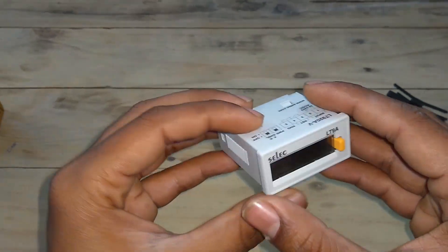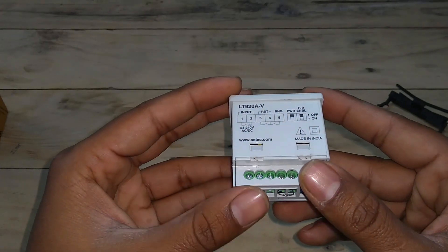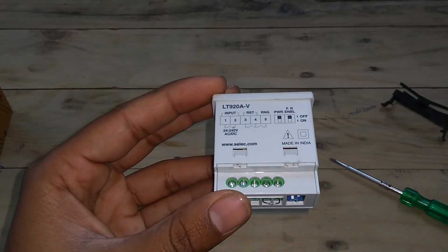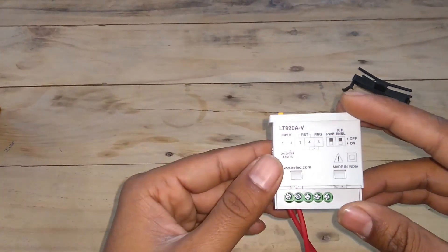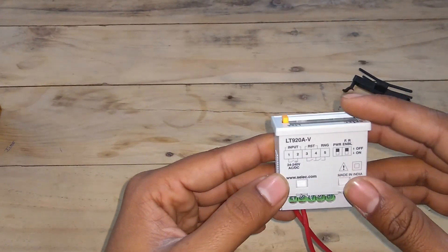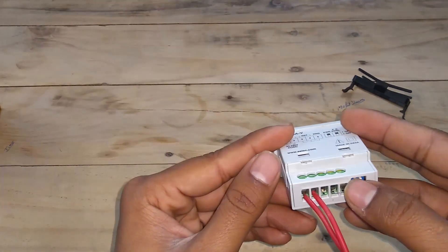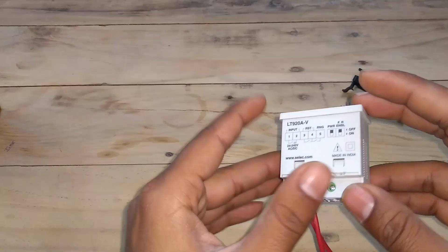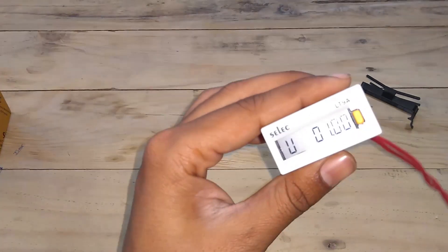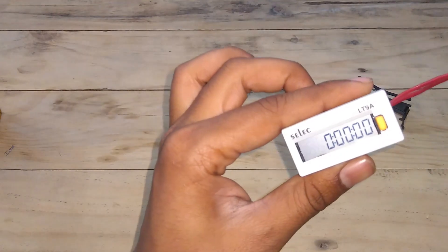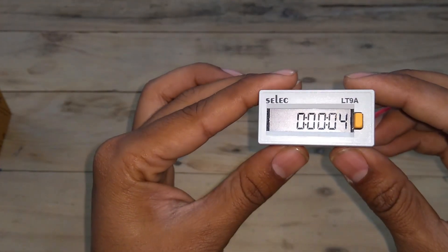Let's give it the input and check what are the values on the screen. I have connected the 220 volt AC to the input of this time totalizer. Now I will turn it on. Now I will plug the power. Now you can see the time has started in seconds.